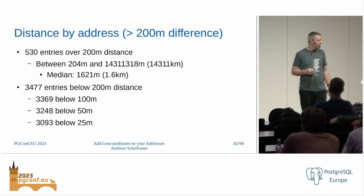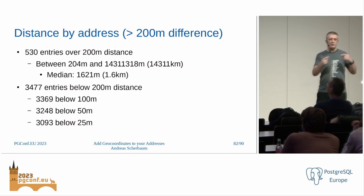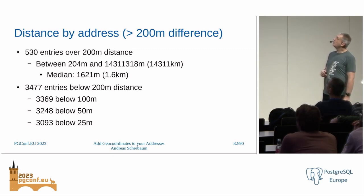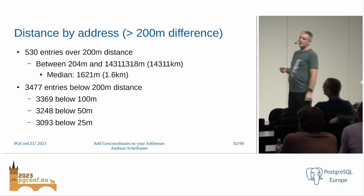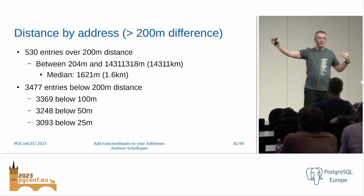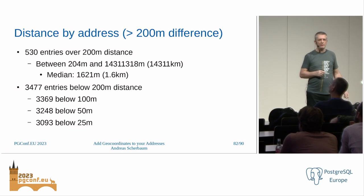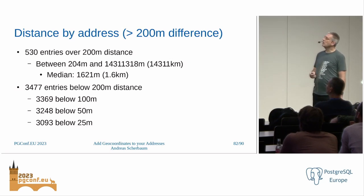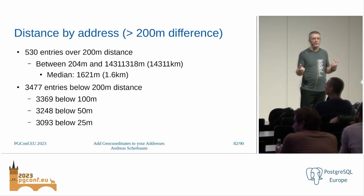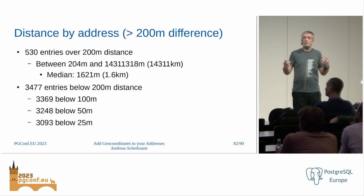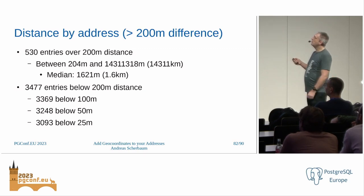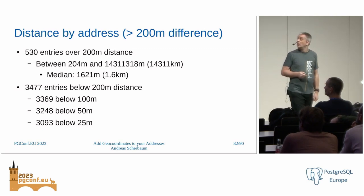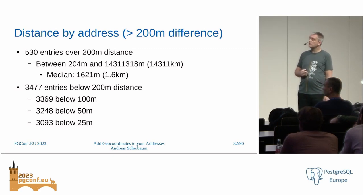530 entries out of the 5,000 are over 200 meters away from the coordinates in the tags — everything between 204 meters and 14,000 kilometers. But on the median it's only about 1.6 kilometers, so it's only a very few examples which are really far away — those are where Nominatim finds an address far from the coordinates we have. 3,500 entries are below 200 meters, so we can really say it's the same building or same area. About 3,000 are below 25 meters — that's a really good result.